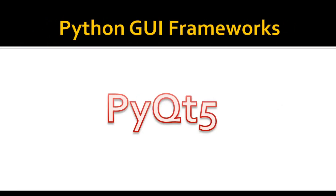The first GUI framework we are going to talk about is PyQt5. PyQt5 is a graphical user interface framework for Python — one of the most powerful and popular Python GUI frameworks. PyQt is a binding of Qt5 C++, which is a GUI framework for C++ developers. You can create programs in PyQt5 using code or using Qt Designer, a visual tool where you can drag and drop UI widgets.